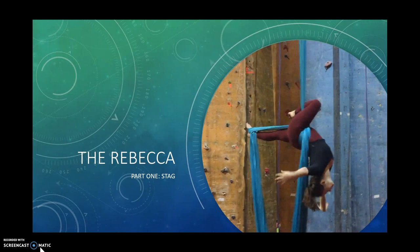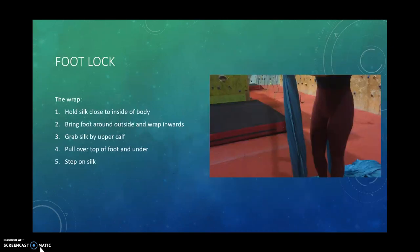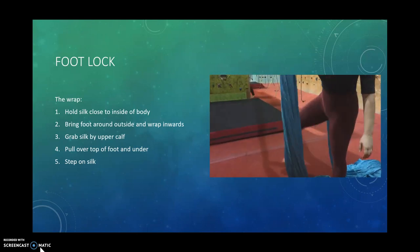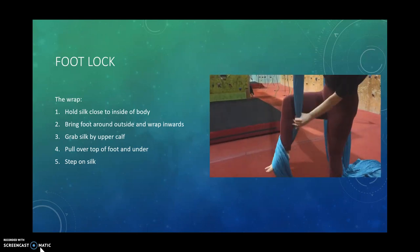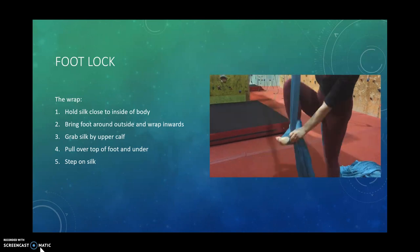On to the move. Part one of the Rebecca is called the Stag. The first step in the Stag is a footlock. This move is pretty basic in what you'll be doing with all other moves in Aerial Arts. For the footlock, you're going to hold the silk close to the inside of your body. Put your foot out and around, inside, grab by your calf, over, under, and step on the silk.